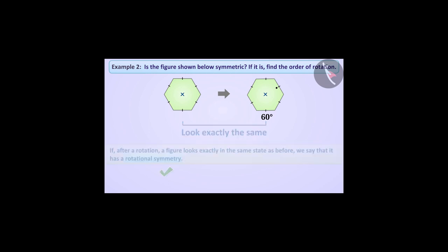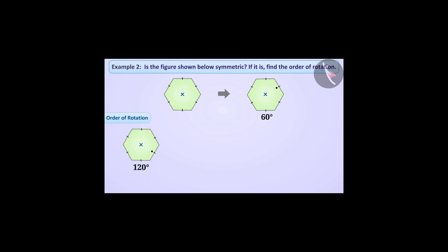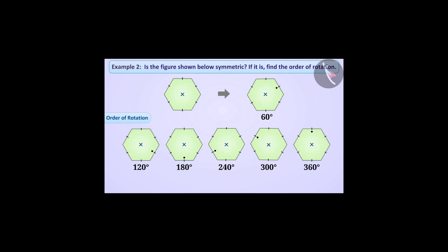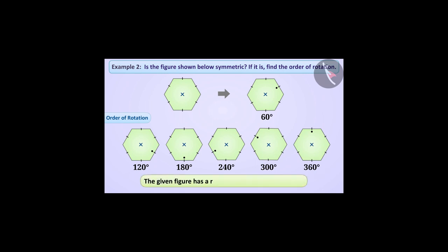Let's find the order of rotation. We get a symmetric shape from the first figure when rotated at an angle of 60 degrees. Similarly, we see that even after rotating the figure at angles of 120 degrees, 180 degrees, 240 degrees, 300 degrees, and 360 degrees, we get figures symmetrical to the first figure. In this way, we can say that the given figure has a rotational symmetry of order 6.